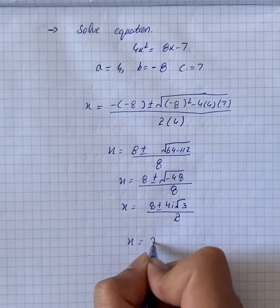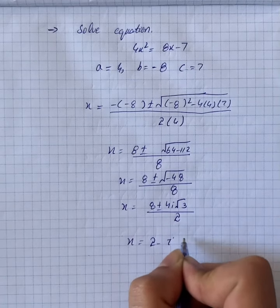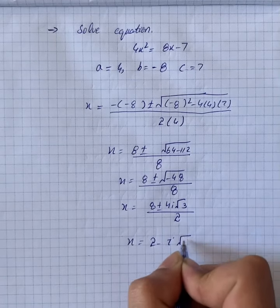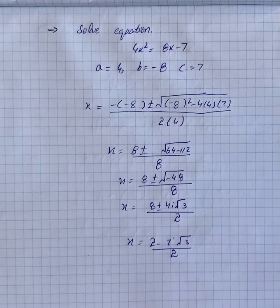So we have x is equal to 2 plus minus i under root 3, divided by 2. That is our solution.